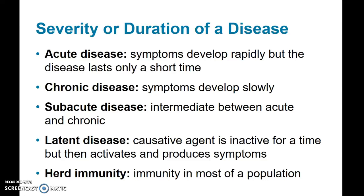We can also look at the severity or duration of a disease. Acute diseases are where symptoms develop very rapidly but the disease lasts a short period of time. A chronic disease is where symptoms might not be as severe, but develop slowly and last a very long time. A sub-acute disease falls between acute and chronic. A latent disease is one where the microorganism is present but stays inactive, then later becomes active — such as the chicken pox virus, which can become latent in nerve sheaths and later cause shingles.